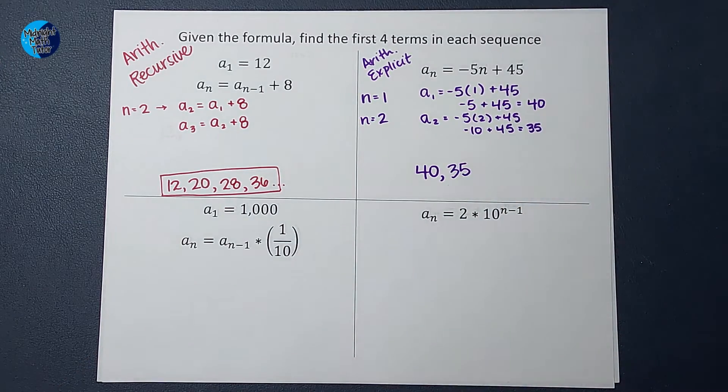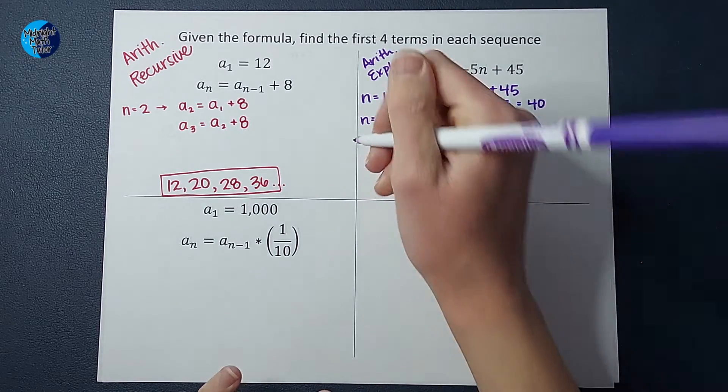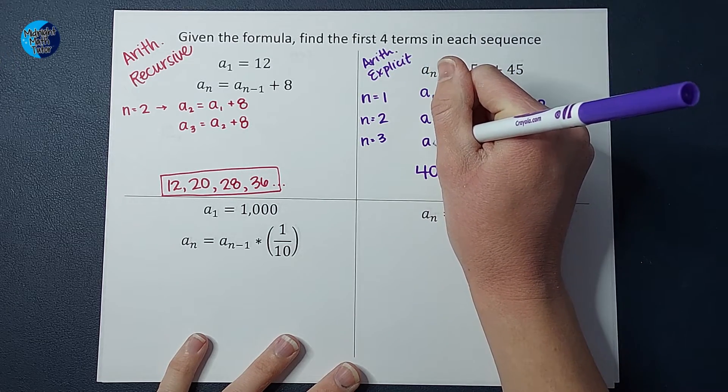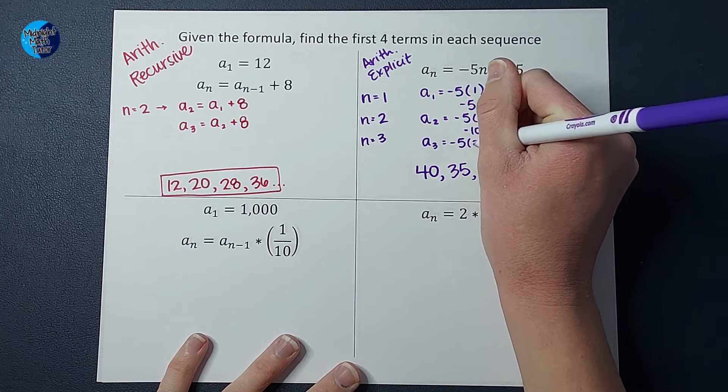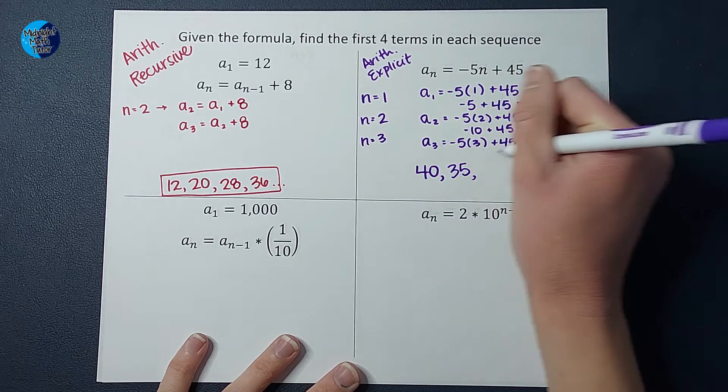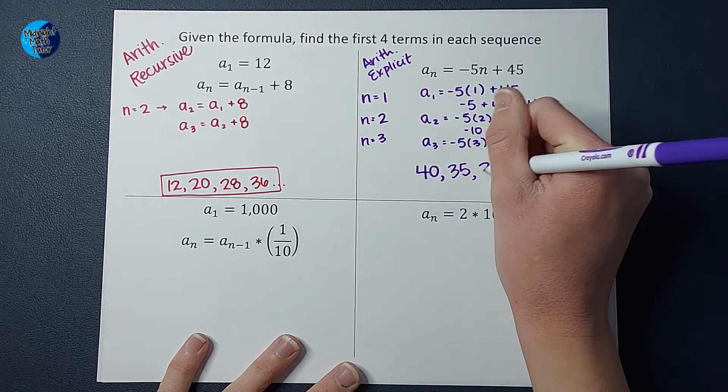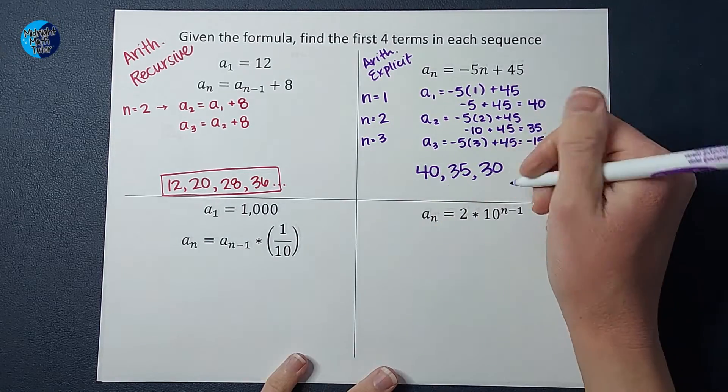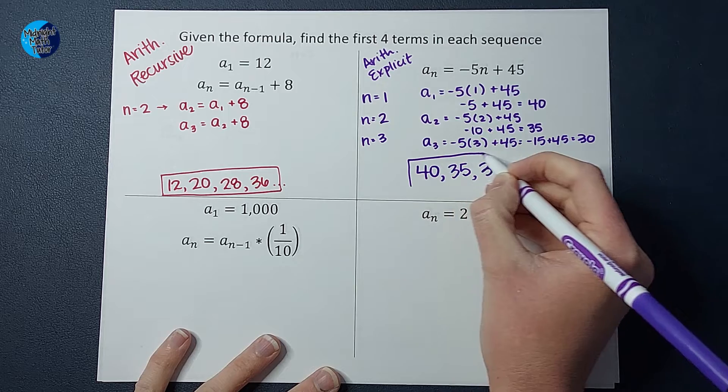I'm thinking, oh, maybe we're subtracting 5 each time. But I kind of want to find one more just to solidify that. So n equals 3. The third one, I take a sub 3 is equal to negative 5 times 3 plus 45, which gives me 30. So I'm feeling pretty confident that we are subtracting 5 each time. So my next one would be 25.